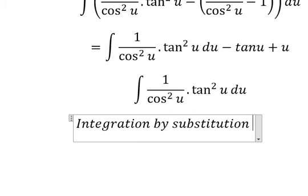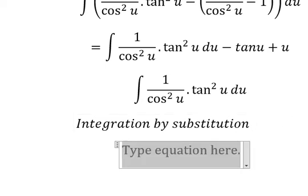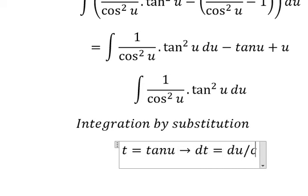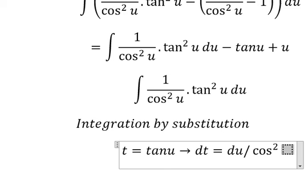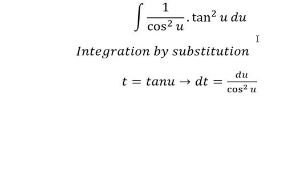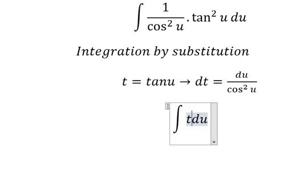So we have t equals tan u, dt equals du over cos u square. So we have t squared dt.